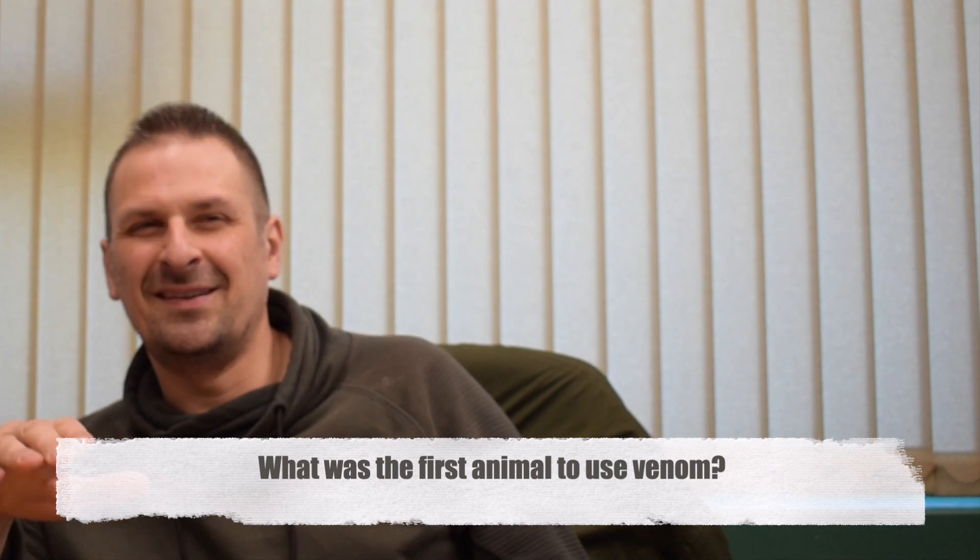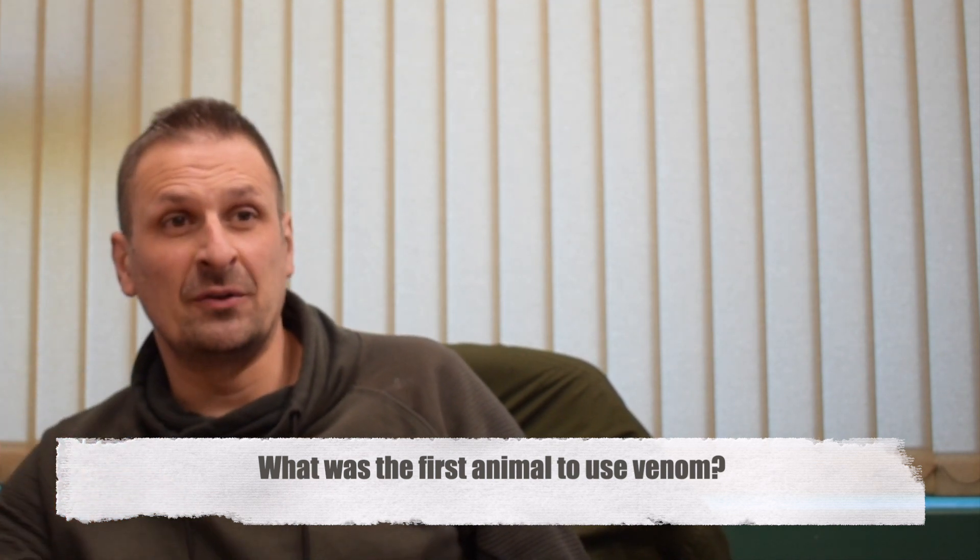This is actually a bit of a tricky question because obviously the venom glands do not preserve very well or not at all in the fossil records. So the only indication we have is actually structures that are associated with the use of venom. So for example, spines or fangs to actually inject venom into another organism.